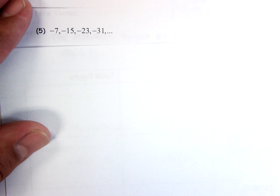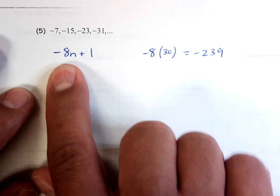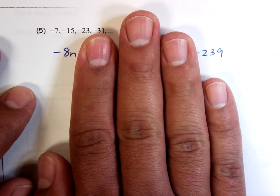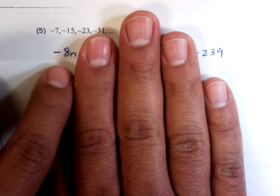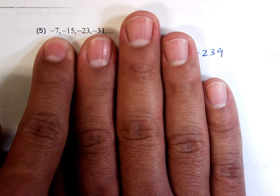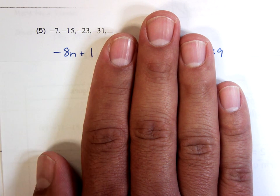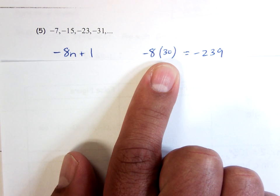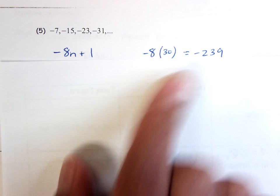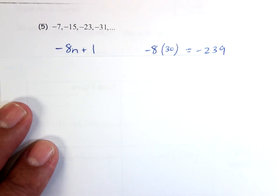For the next sequence, the numbers are going down by 8 — the difference is negative 8. Doing negative 8 times 1 gives negative 8, but the first term should be negative 7, so add 1. The nth term is −8n + 1. For the 30th term: negative 8 times 30 gives negative 240, plus 1 equals negative 239. We'll do more of these in class.